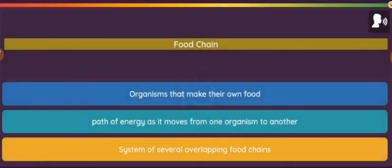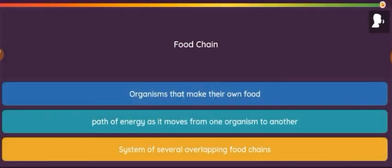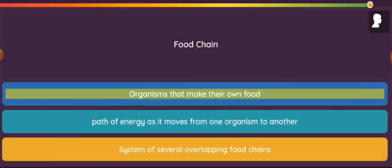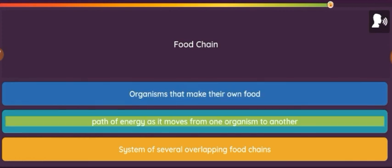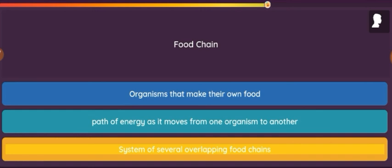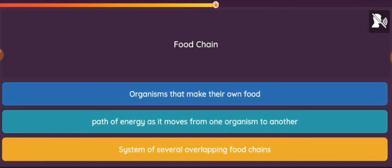Question: Food chain. Option 1: Organisms that make their own food. Option 2: Path of energy as it moves from one organism to another. Option 3: System of several overlapping food chains.